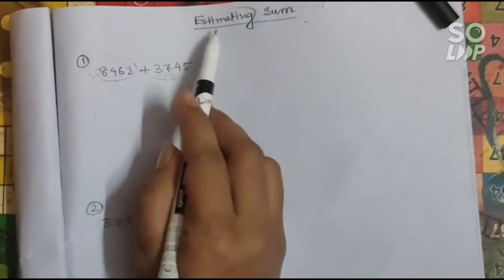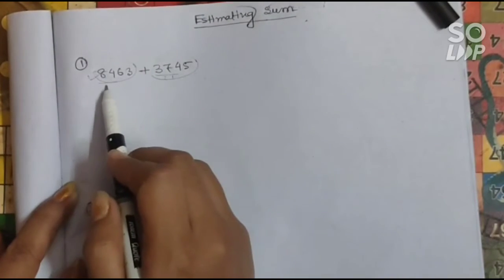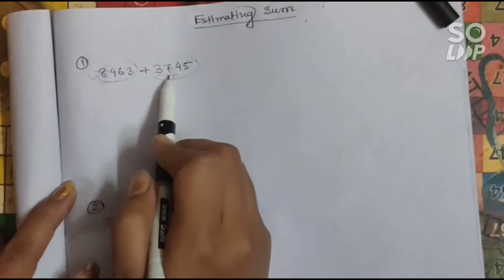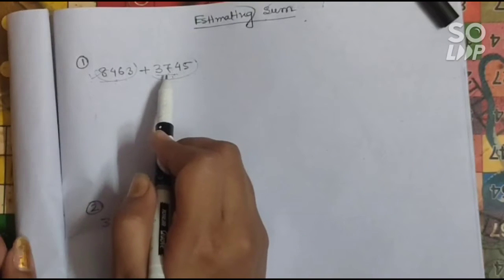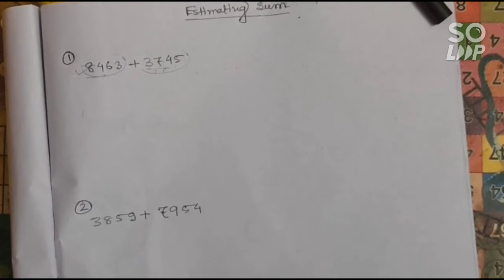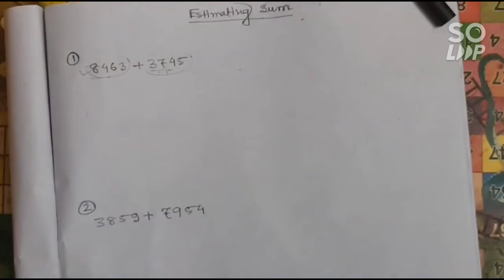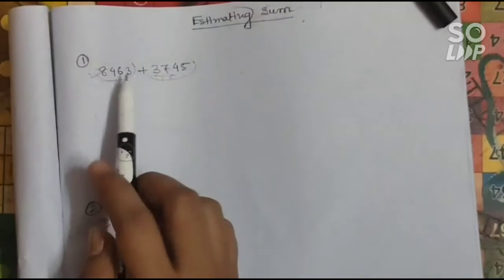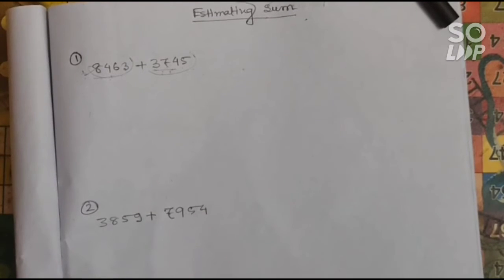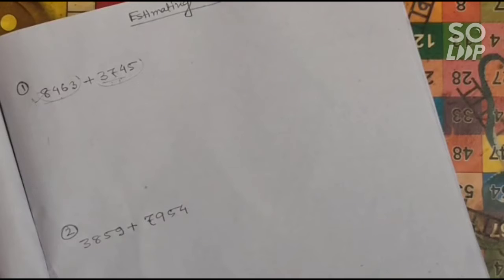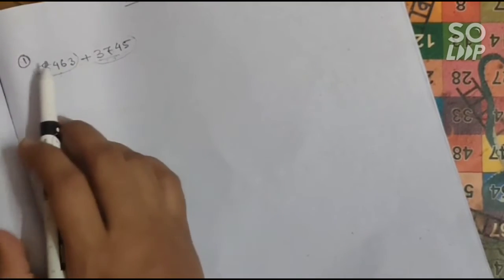We will understand this using some examples. First, you have to estimate the sum of two numbers: 8463 plus 3745. You know that 3745 is smaller than 8463, and it is a four-digit number. Any four-digit number has thousands as its highest place. So you have to round off each number to the nearest thousand, because the smaller number is in the thousands.